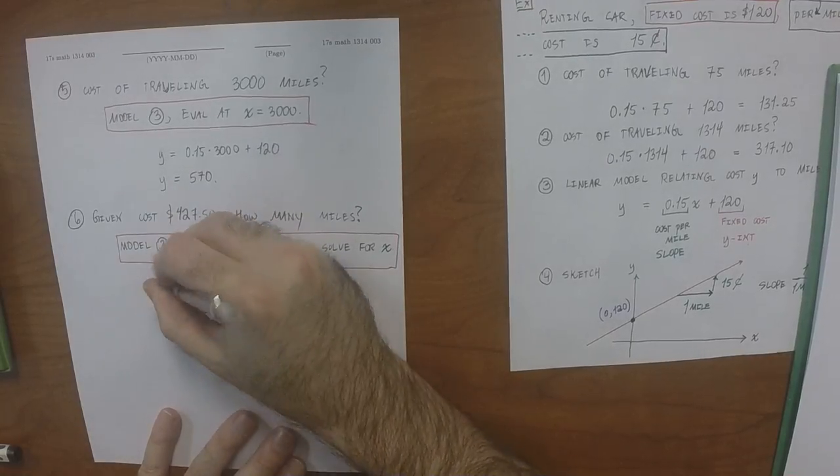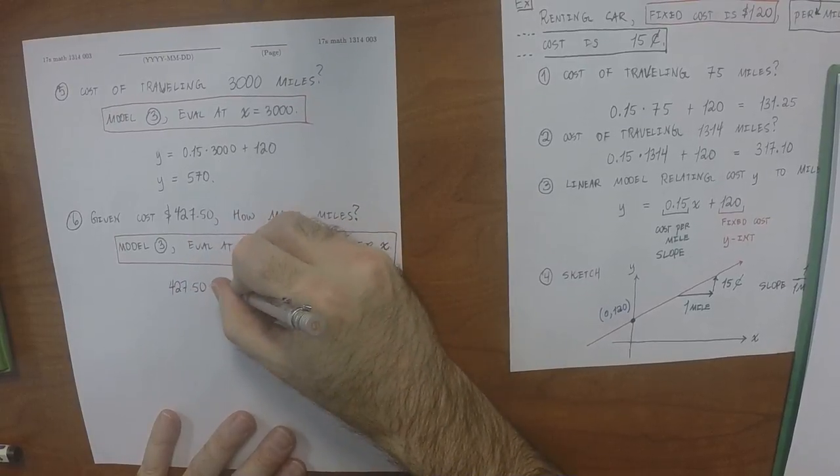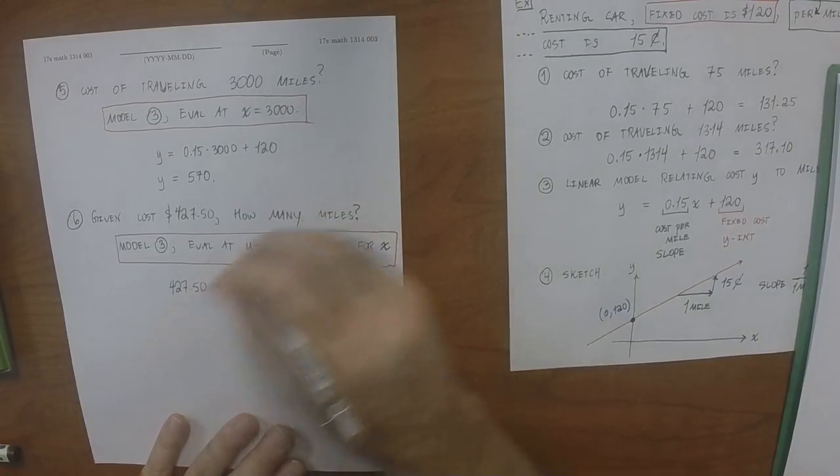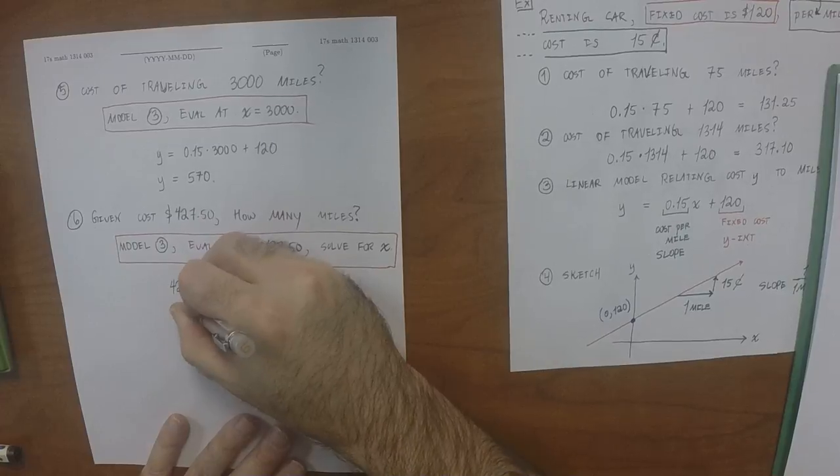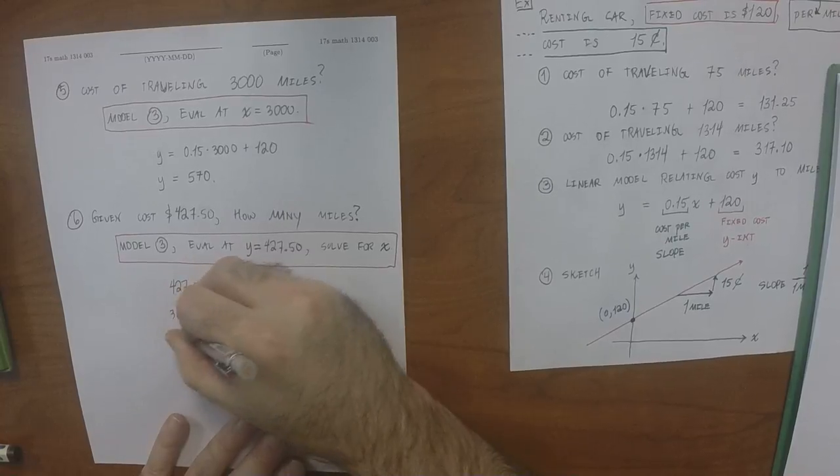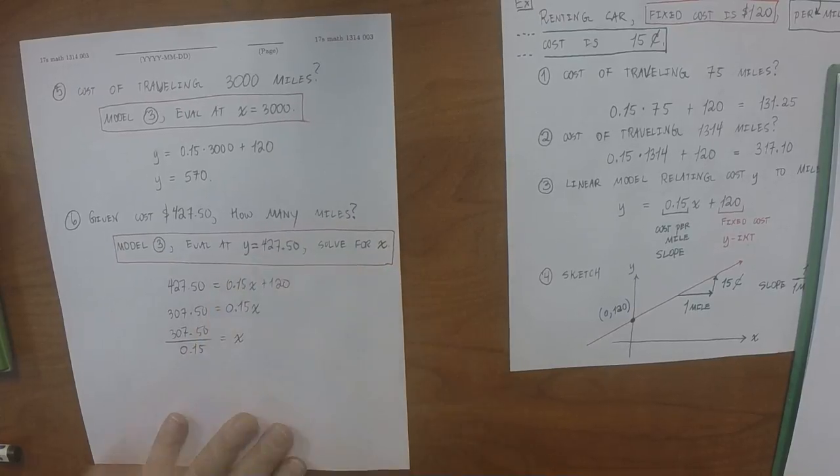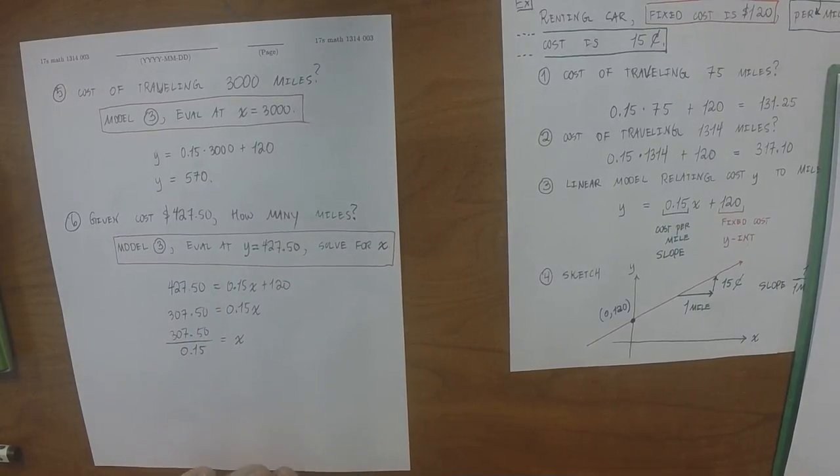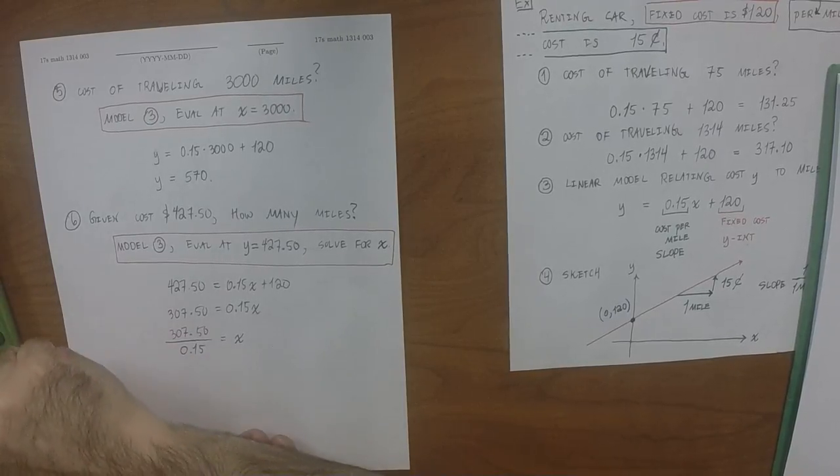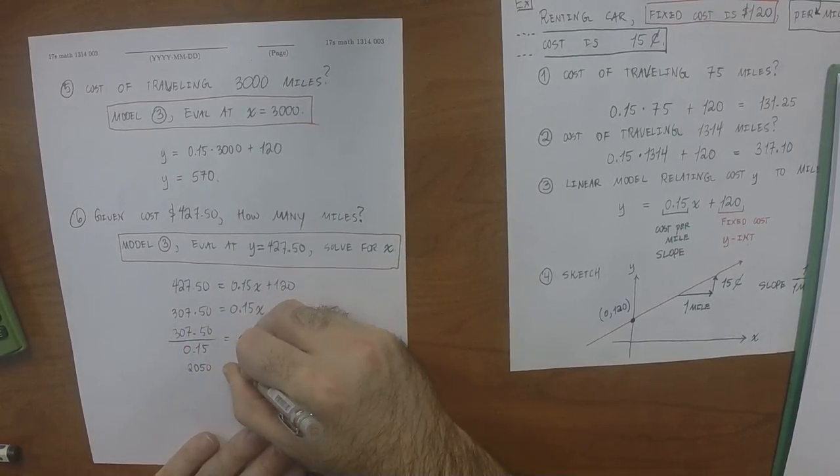Okay. So then 427.50 equal 0.15x plus 120. So that'd be 307.50 is 0.15x. So 307.50 divided by 0.15 equal x. And then now this is something you can type into your calculator. And get 2,050 is x.